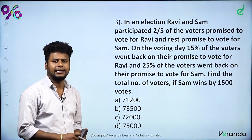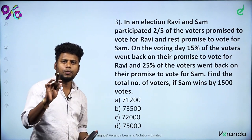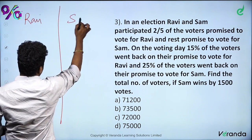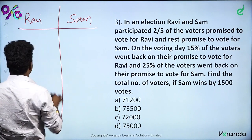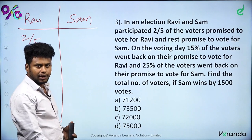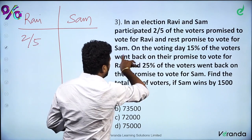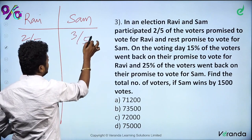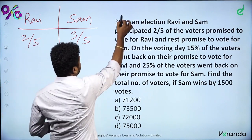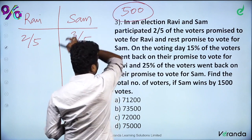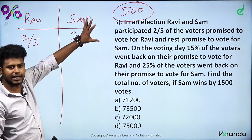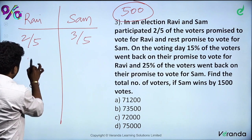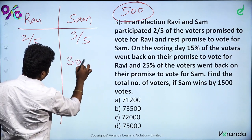In an election, Ravi and Sam participated. Two-fifths of the voters promised to vote for Ravi — that is 2 parts out of 5, so 200 parts for Ravi. The rest — three-fifths — promised to vote for Sam, which is 300 parts for Sam.